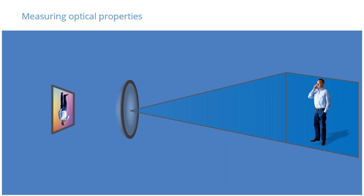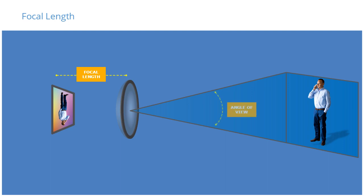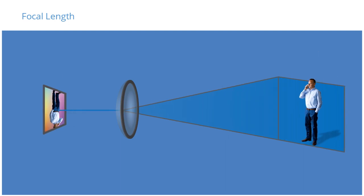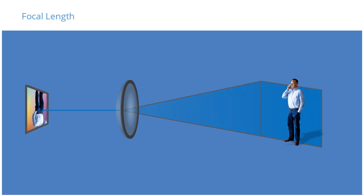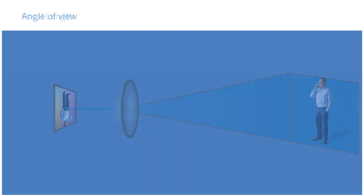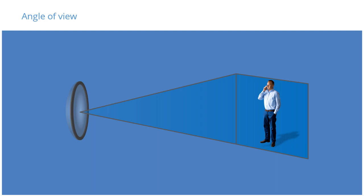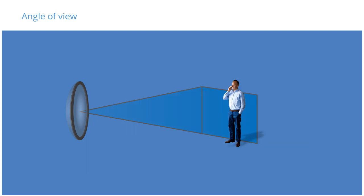Let's look more closely at the different ways that we measure image and video properties. The focal length measures the distance between the lens and the image sensor, usually expressed in millimeters. You can change the angle of view and field of view by changing the focal length — in other words, by moving the lens closer or farther from the image sensor. The angle of view measures the maximum height and width the camera is capable of seeing through a lens, expressed in degrees. A larger angle of view shows more height and width of the subject; a smaller angle of view shows less.